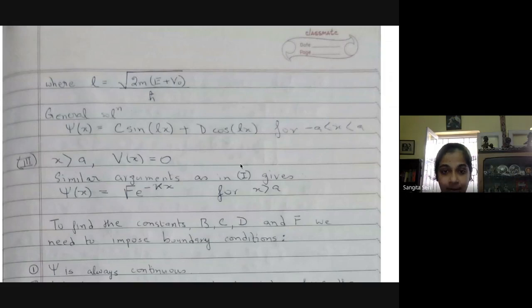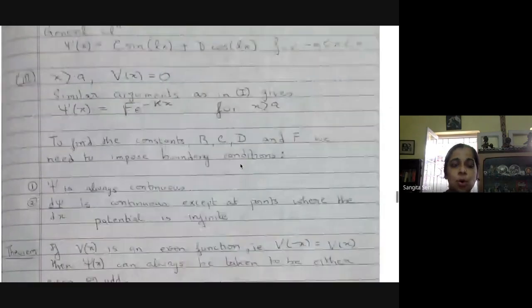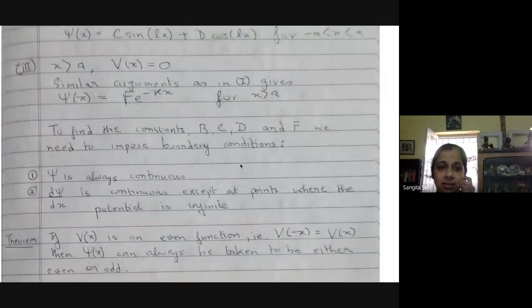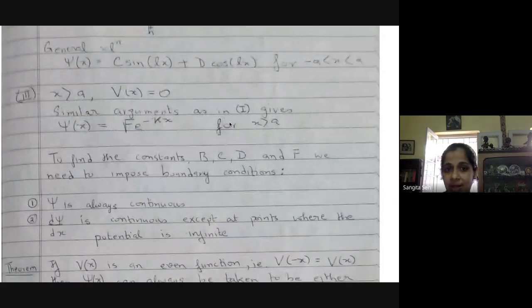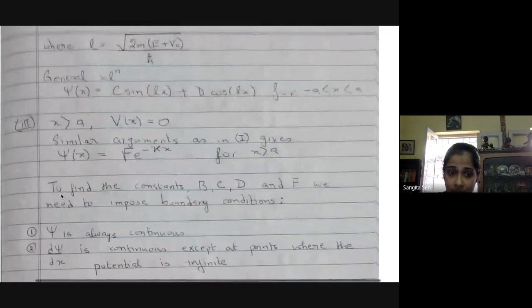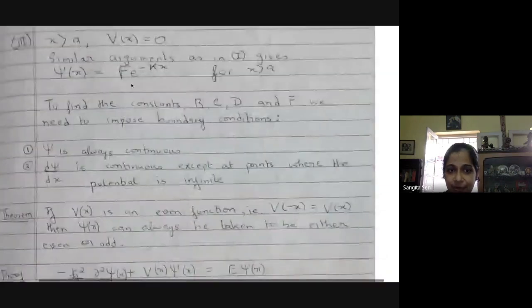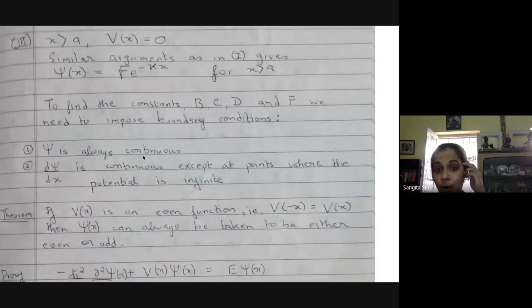When we go to x greater than a, by analogy with case one, we discard e^(+κx) and keep only F·e^(−κx), so that as x → +∞ ψ tends to zero, allowing normalization. We have introduced constants B, C, D, and F, and we need to find all of these by imposing suitable boundary conditions.